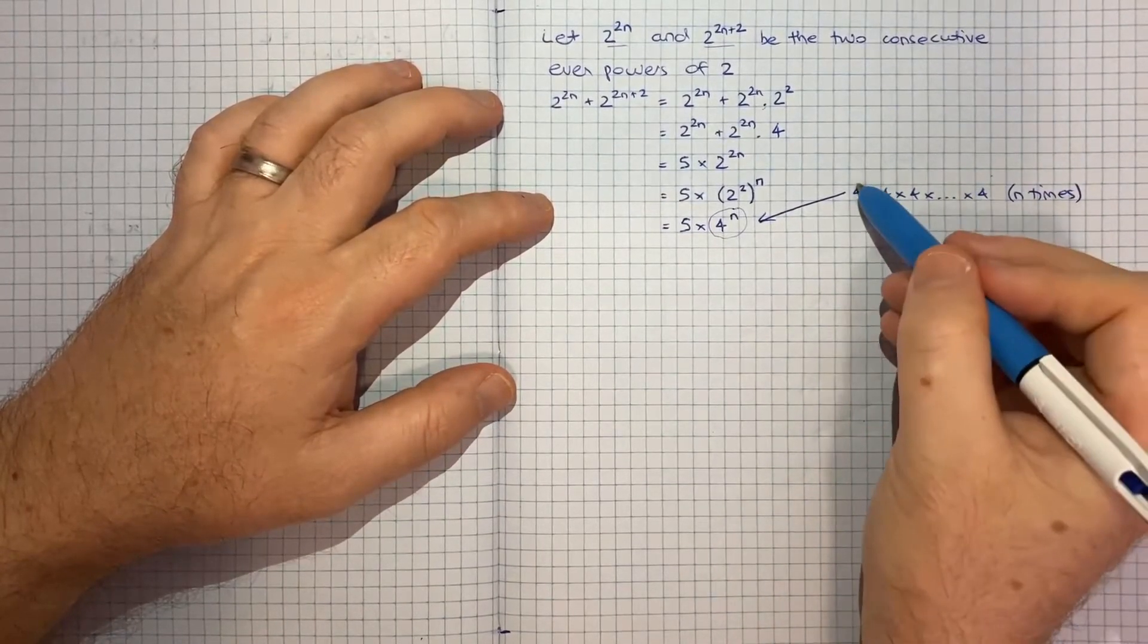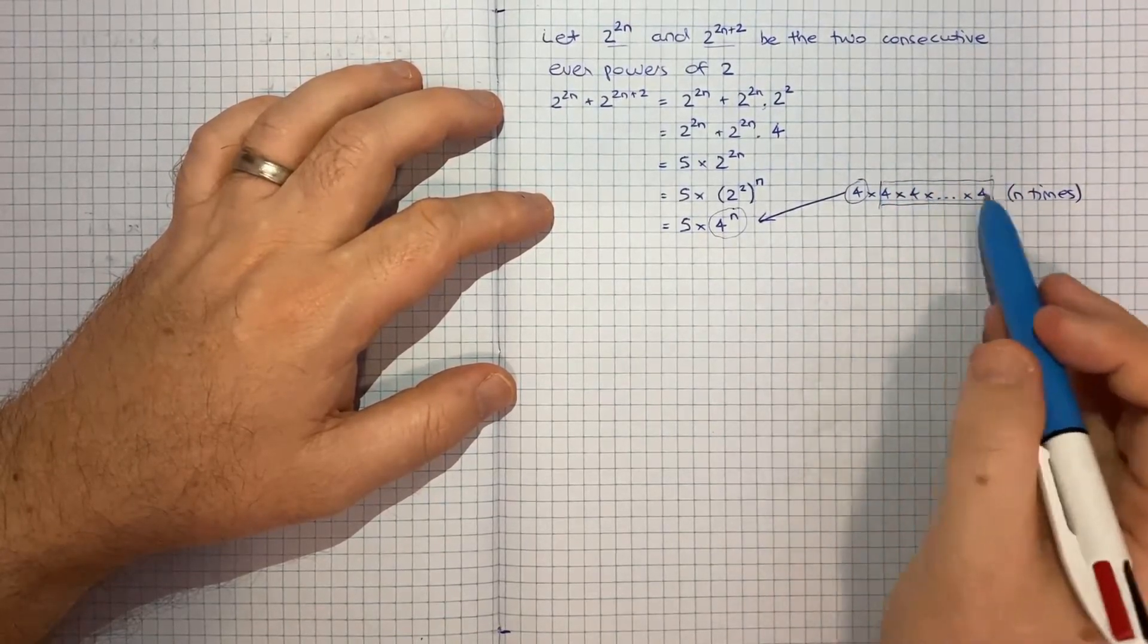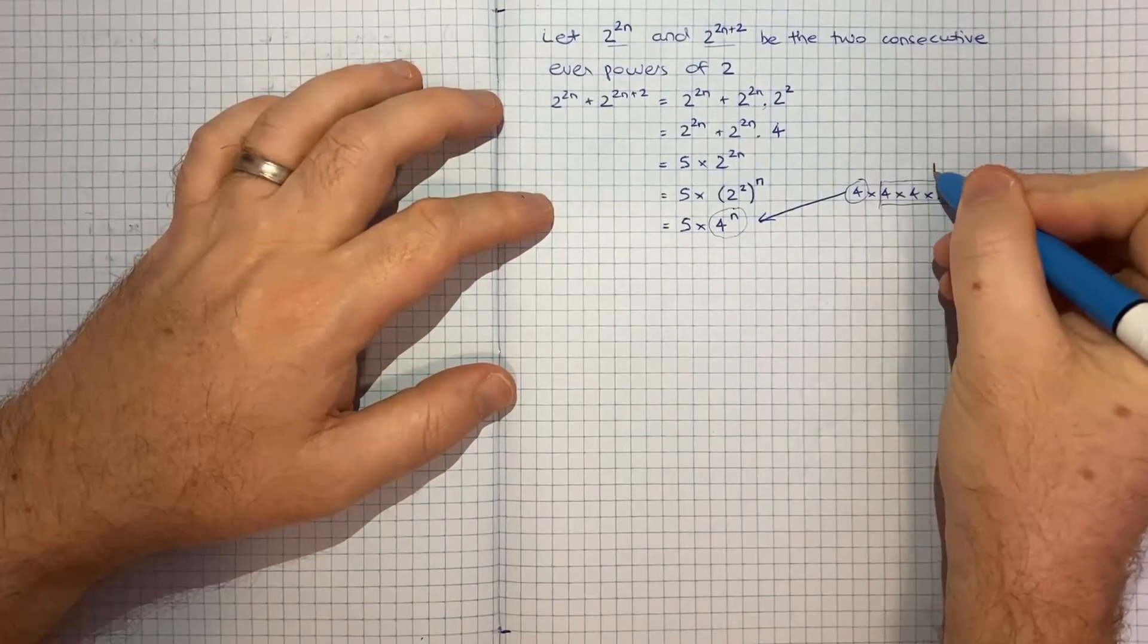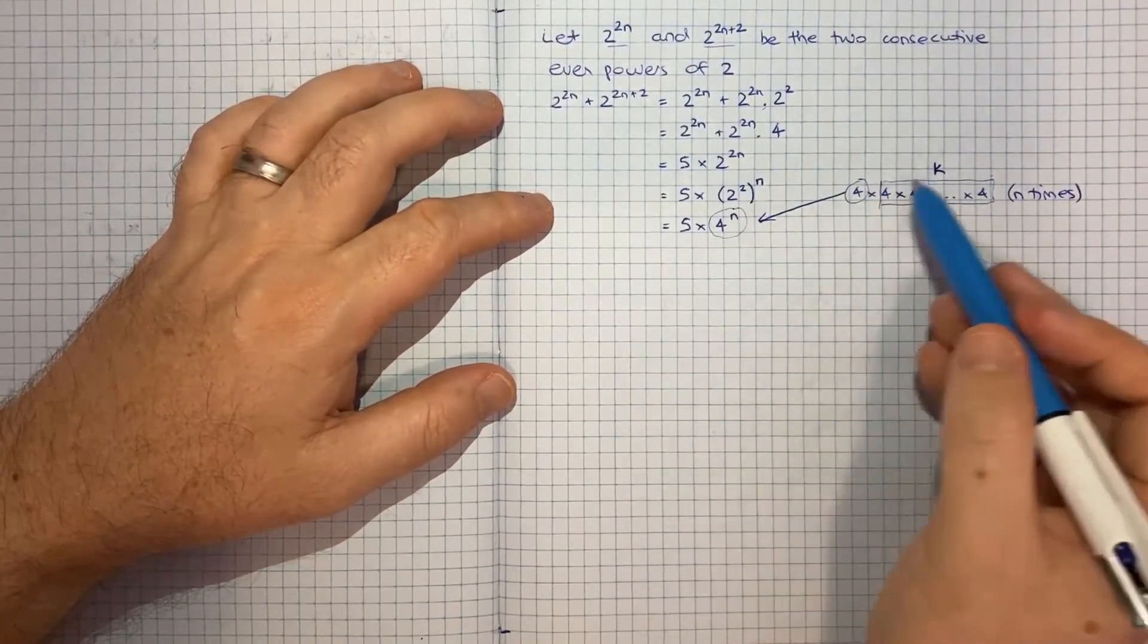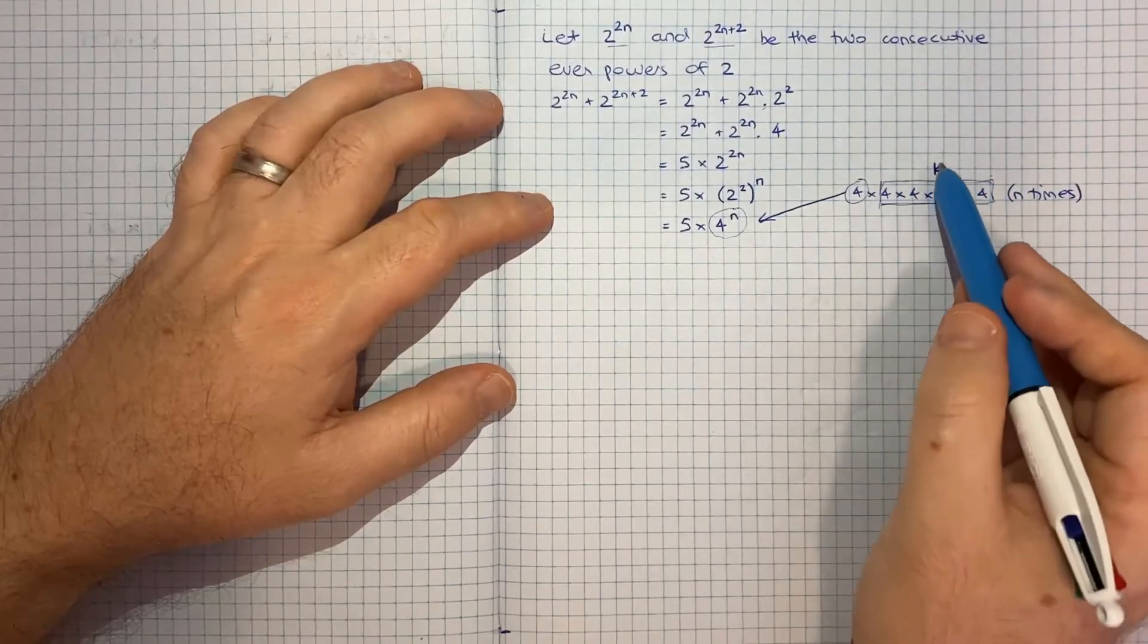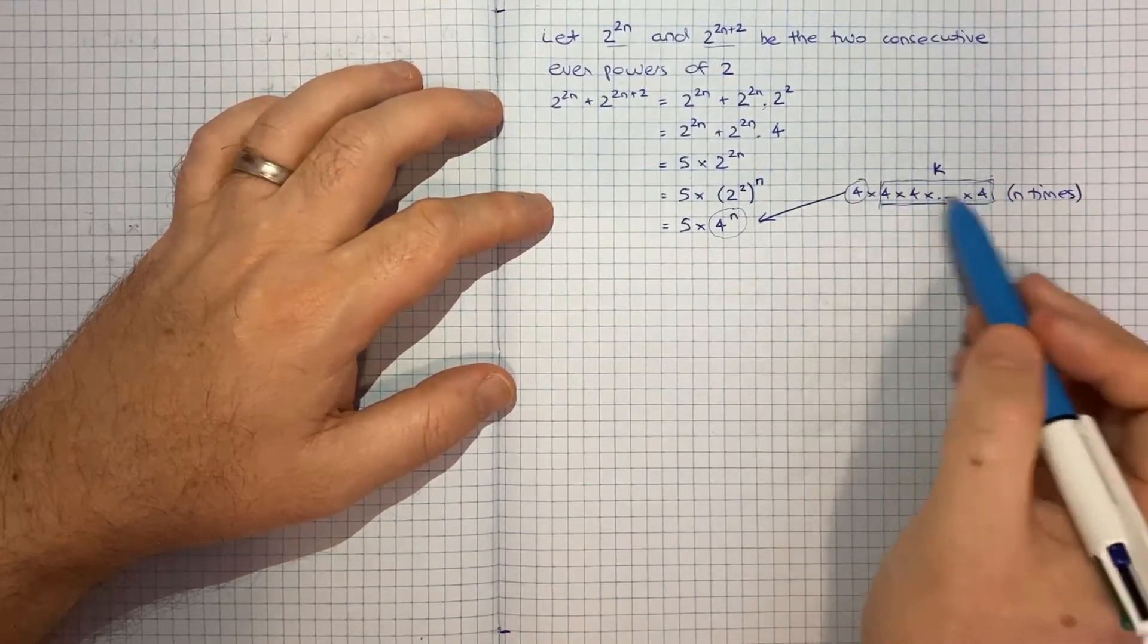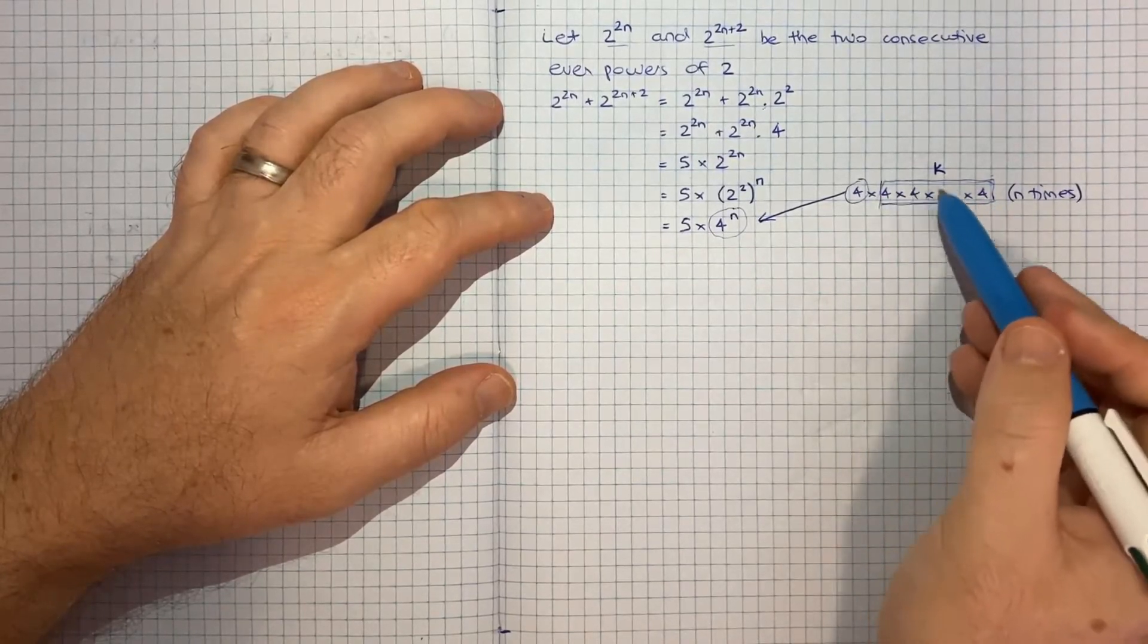So if I was to factor out one of these 4s, if I was to call all the remaining 4s some number k, we can write 4 to the n as simply 4k. That is something you can definitely do. And this k would just be the remaining 4 times 4, basically 4 to the n minus 1.